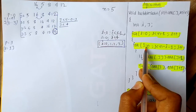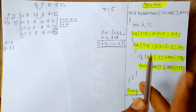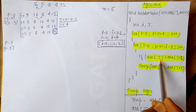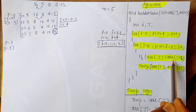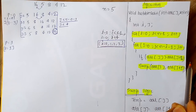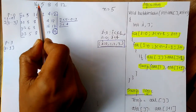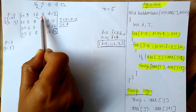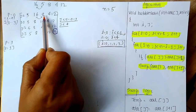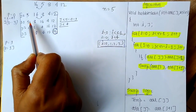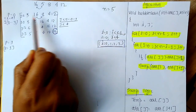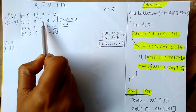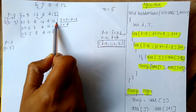Then j becomes 1. We check: is array[1] greater than array[2]? Array[1] is now 16 and array[2] is 8. Yes, so we swap again. After swapping it becomes: 5, 8, 16, 4, 12.